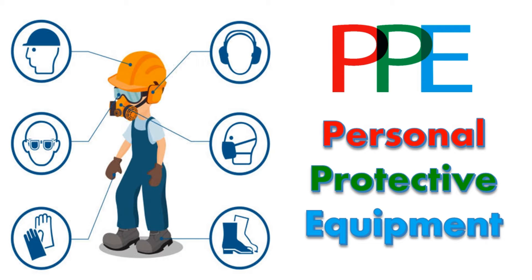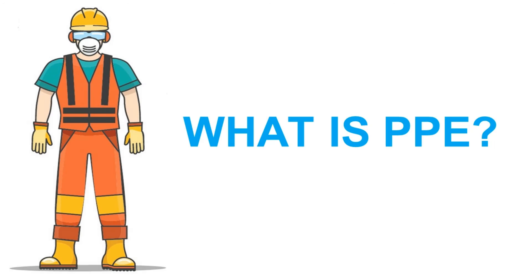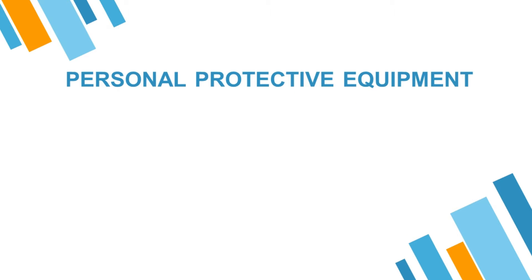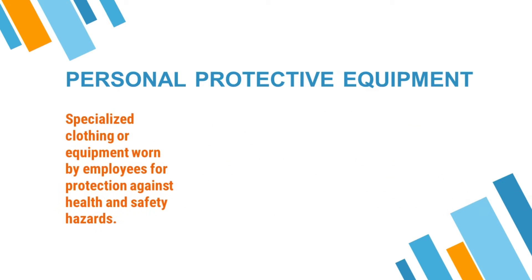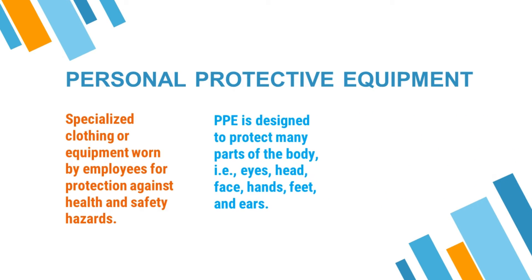Hello friends, I am Fanny. Today I come up with the topic Personal Protective Equipment. PPE means Personal Protective Equipment. It is a specialized clothing or equipment owned by employees for protection against health and safety hazards. PPE is designed to protect many parts of the body, i.e. eyes, head, face, hands, feet and ears. And it acts as a barrier between hazard and person.